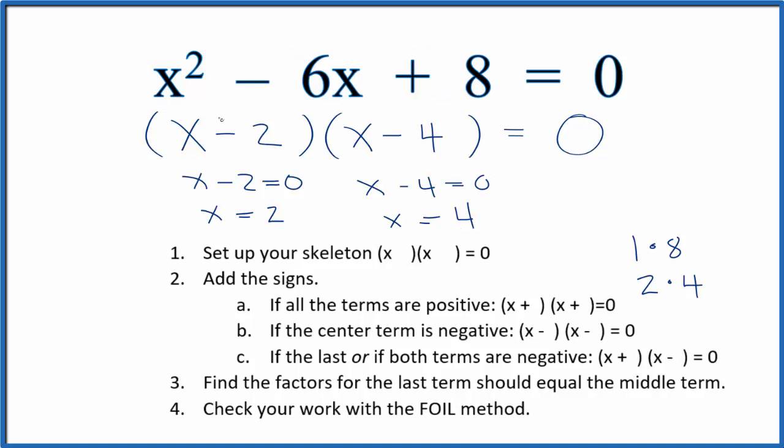So we know that we've factored this equation, x squared minus 6x plus 8 equals 0, correctly by checking our work here. This is Dr. B solving the equation x squared minus 6x plus 8 equals 0 by factoring. Thanks for watchin'.